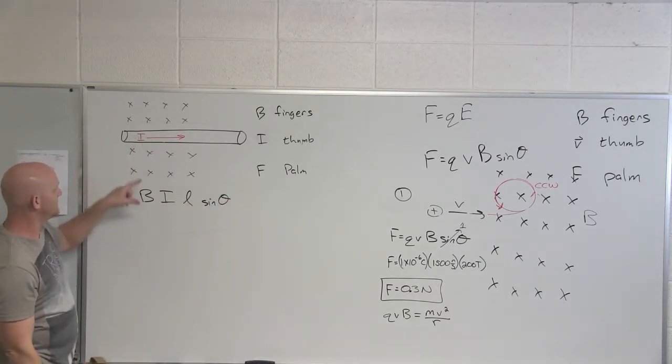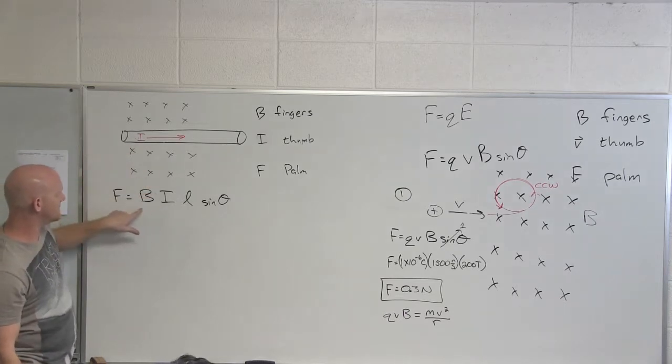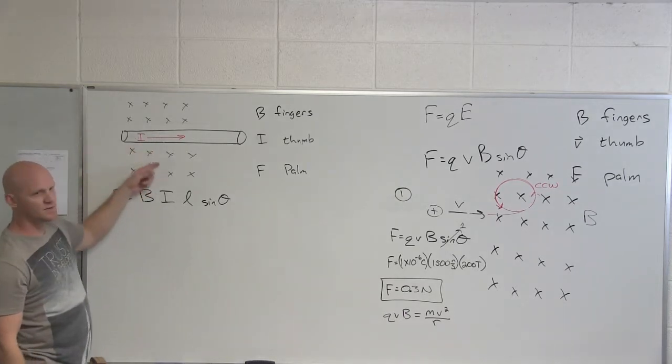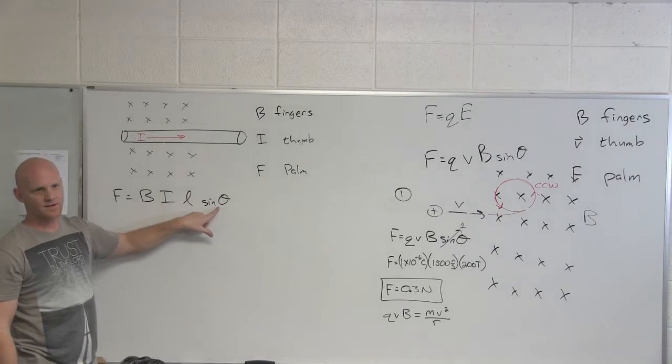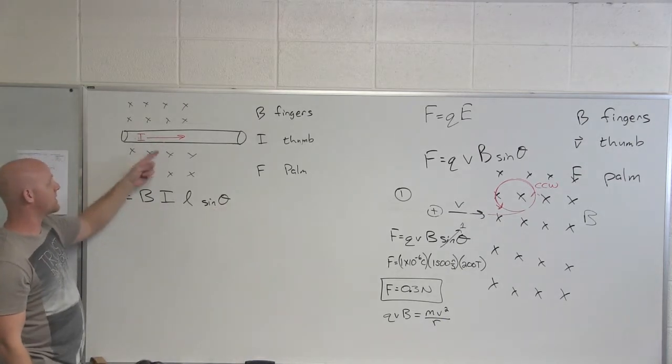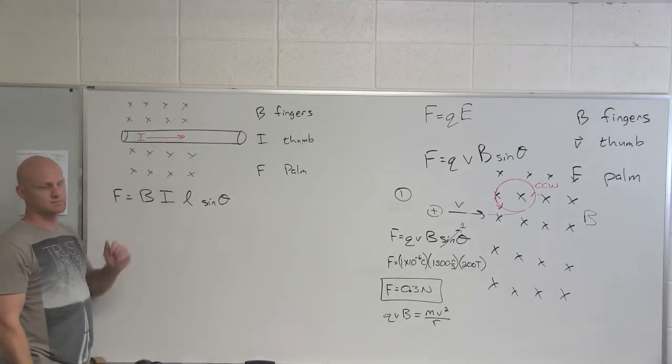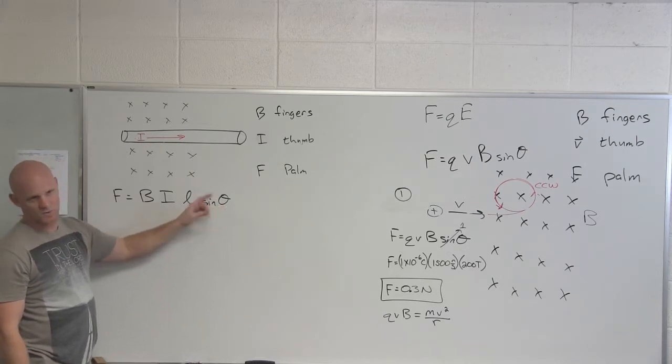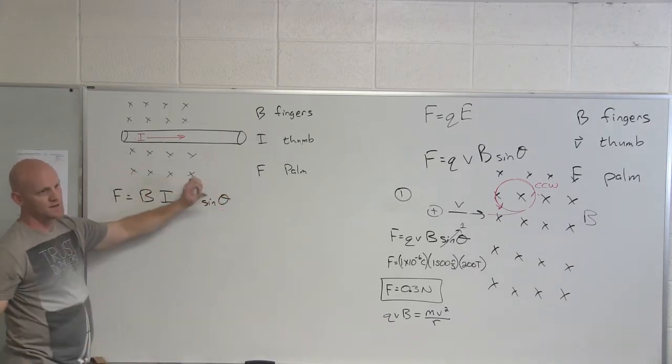And so in this case, if your current and your magnetic field aren't exactly 90 degrees apart, then you'll have to factor in that angle theta. In this case, how far apart is the magnetic field and the current? They're 90 degrees apart, and sine of 90 is one that's going to go away for this example.